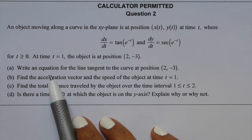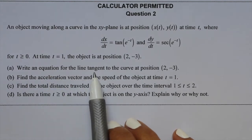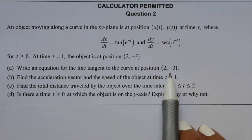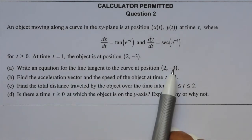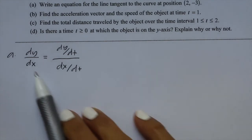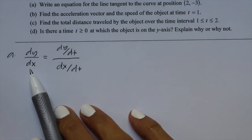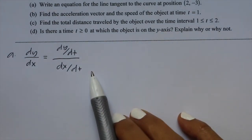Part A: Write an equation for the line tangent to the curve at the position (2, -3). To write an equation of the tangent line, we need a point and a slope. We already have a point, so we just need the slope. For parametric equations, the slope dy/dx equals dy/dt over dx/dt.